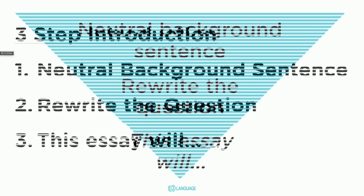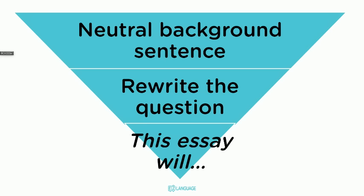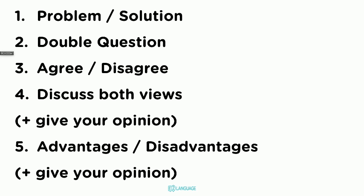Think about an upside-down triangle. The first sentence of your introduction is the neutral background sentence — it's broad, and neutral means it does not have an opinion. It's just a background sentence on the topic. The second sentence, you rewrite the question, getting closer to the topic. Third sentence: 'this essay will.' We're going to apply this introductory three-step framework to all IELTS essay types: problem/solution, double question, agree/disagree, discuss both views, and discuss both views and give your opinion.